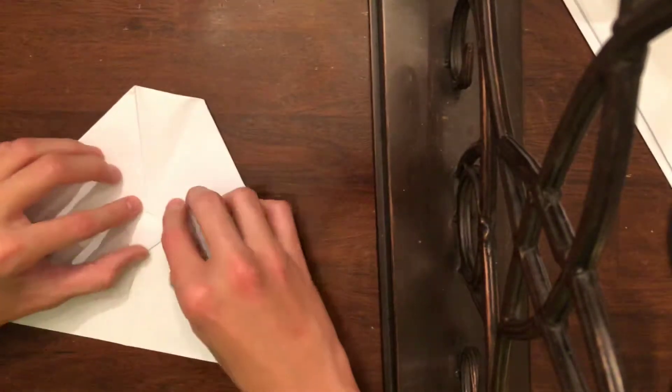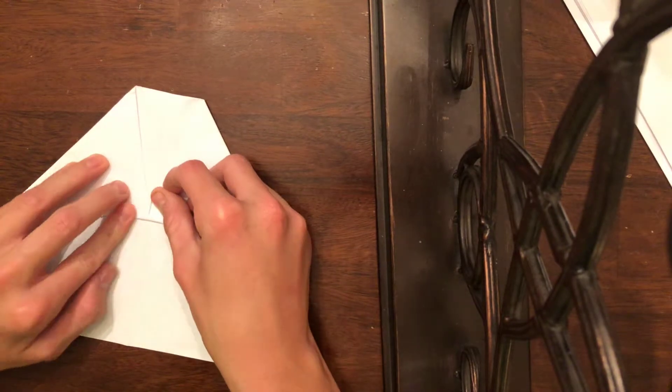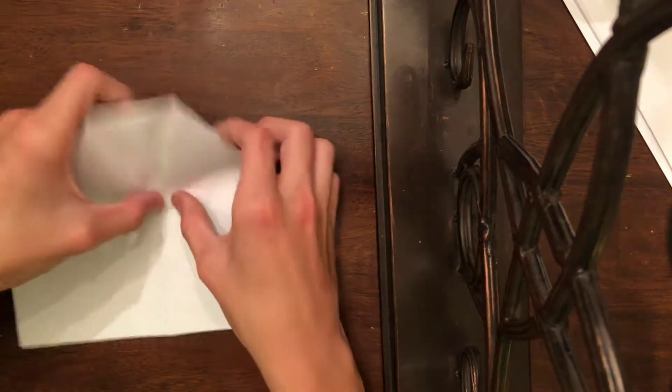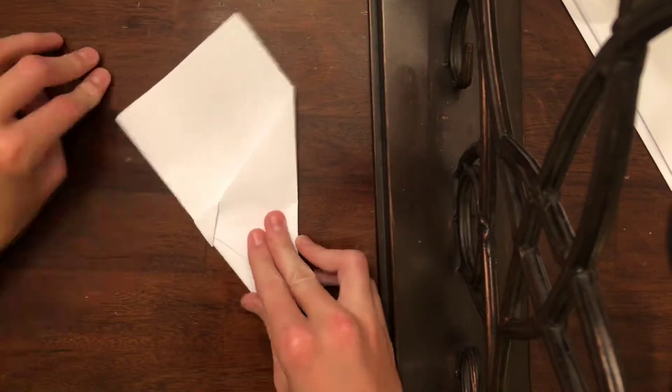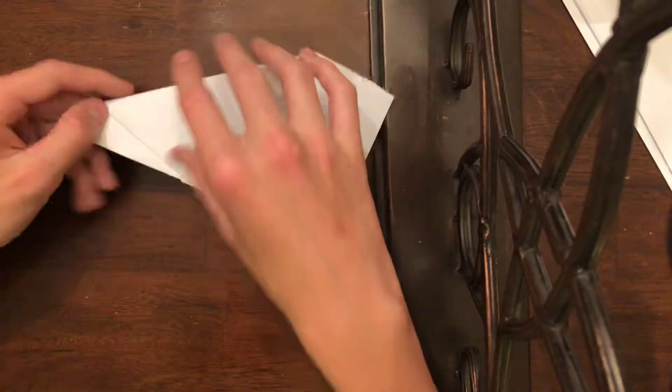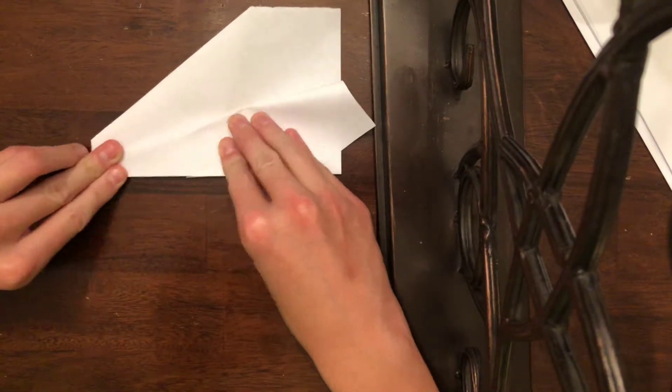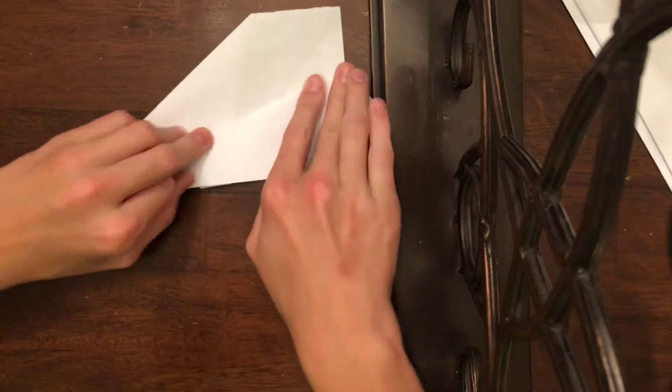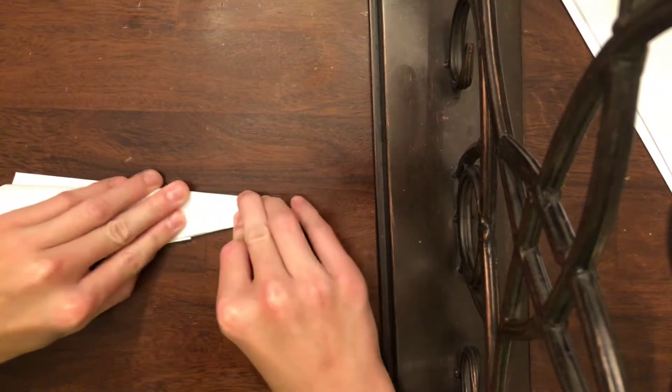And then you're just going to want to fold it in half, and then you're just going to want to make the wings just by simply going down. Just like that. See guys, this plane is a very simple build.